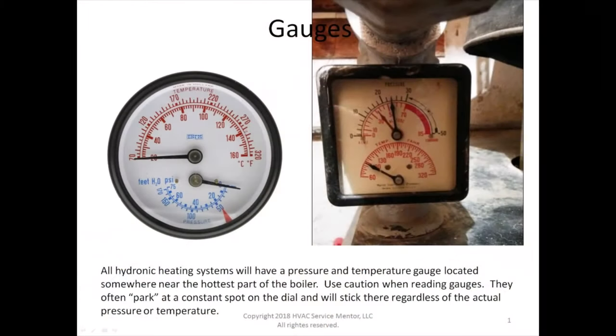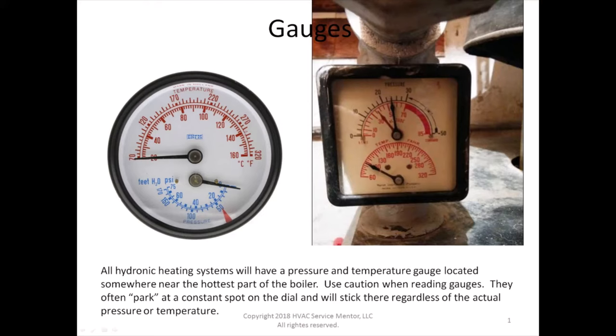When you first arrive on a job site, one of the things you need to concern yourself with is: what is the pressure in my boiler system? All hydronic heating systems are going to have a pressure and temperature gauge located somewhere near the hottest part of the boiler. Use some caution when reading these gauges because they can often get stuck in a constant spot on the dial regardless of what the actual pressure or temperature is. Once you've verified you can rely on your gauges, this is where you'll find that information.